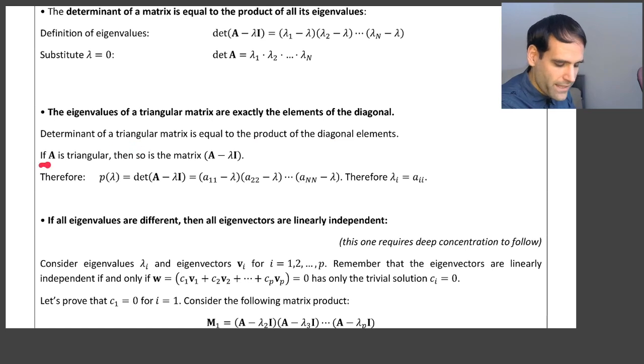Now, if A is triangular, then so is the matrix A minus lambda I, because minus lambda I only changes the terms in the main diagonal. So if there are zeros below the main diagonal, there will also be zeros below the main diagonal for A minus lambda I.